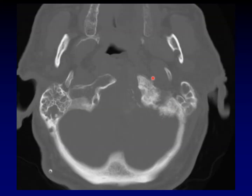Here is the hyperostosis that is characteristic of meningiomas. Meningiomas along the calvarium don't do this quite as often as skull base meningiomas do. The spiky look around the outside and the central sclerosis are characteristic of meningioma.